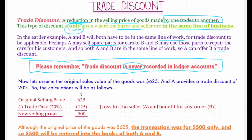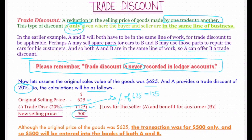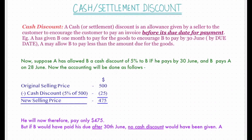Most importantly, please remember that trade discount is never recorded in the ledger accounts. Suppose the original sales value of the goods was $625 and A provides a trade discount of 20%. The calculation: original selling price $625, less trade discount 20% of 625 which is $125, giving a new selling price of $500. Trade discount is a loss for the seller but will still not be recorded in the books of account. Although the original price was $625, the transaction was for $500 only, so $500 will be entered in the books of both A and B.